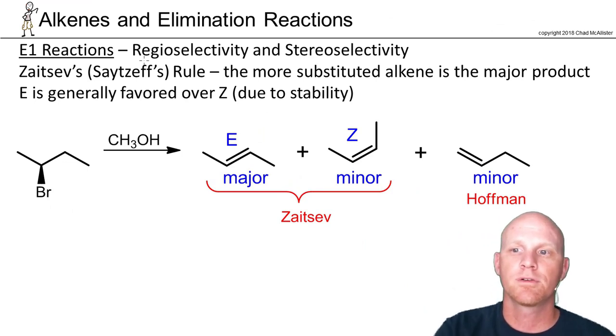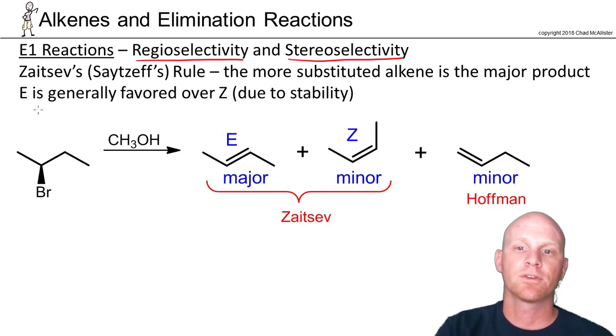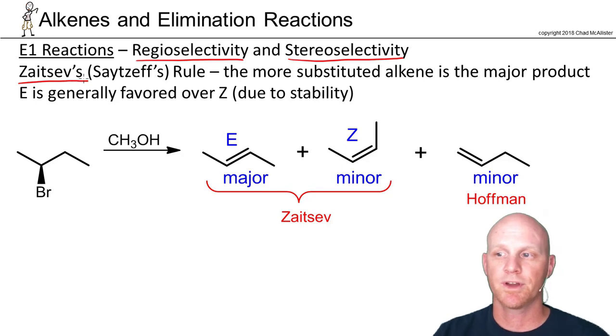Now we want to look at both the regioselectivity as well as the stereoselectivity of an E1 reaction. E1 reactions almost always follow Zaitsev's rule. The idea behind Zaitsev's rule is that the more substituted alkene is the more stable alkene, so you want to form the most substituted alkene possible.